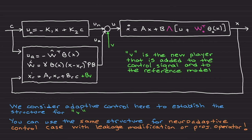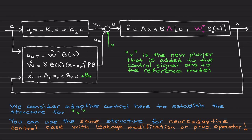I would like to consider adaptive control to establish the structure of the performance recovery signal v. Looking at the block diagram from previous lectures, I am focusing on this system: x-dot equals Ax plus B*delta, where A and B are known, delta is the unknown control effectiveness matrix, and w0 is a parameterized or structured uncertainty. In this video I will use the structured uncertainty case, with the understanding that you can use the same structure for v for neuroadaptive control with leakage modification or projection operator.